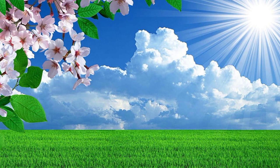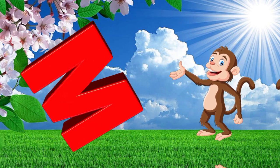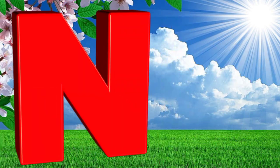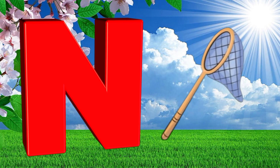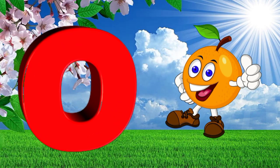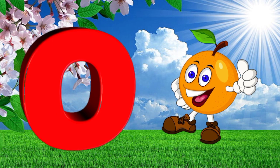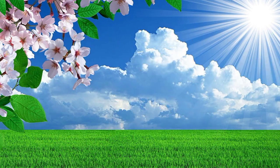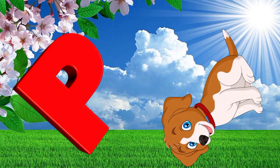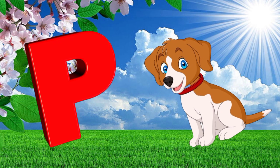M is for mat, m-m-mat. N is for net, n-n-net. O is for orange, o-o-orange. P is for pet, p-p-pet.